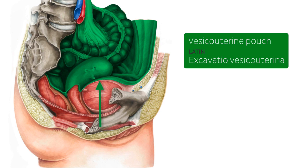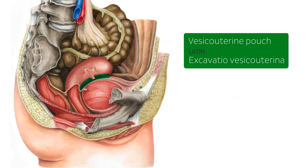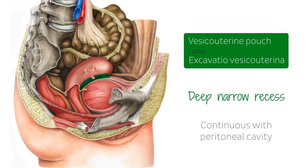But nearing the posterior surface of the bladder, the peritoneum reflects suddenly onto the anterior surface of the uterus, thereby forming a deep, narrow recess between the urinary bladder and the uterus, which is continuous with the peritoneal cavity. So in this image, it kind of looks like the uterus and the bladder are just adjacent to one another, but you just have to imagine that there's a little fold that's created by the peritoneum. And that fold or recess is the vesicouterine pouch.